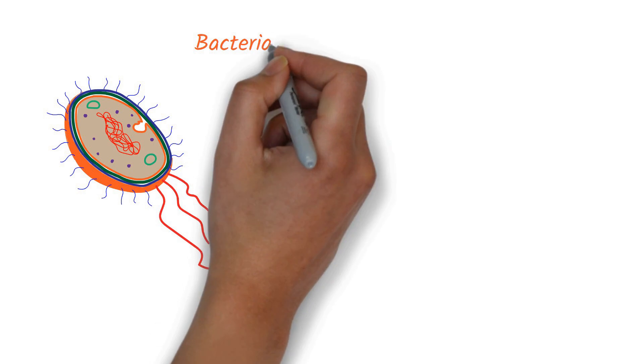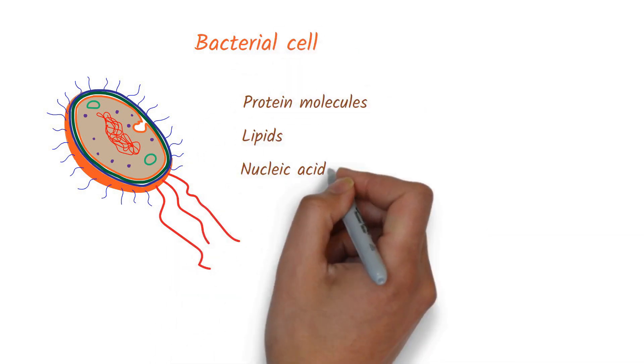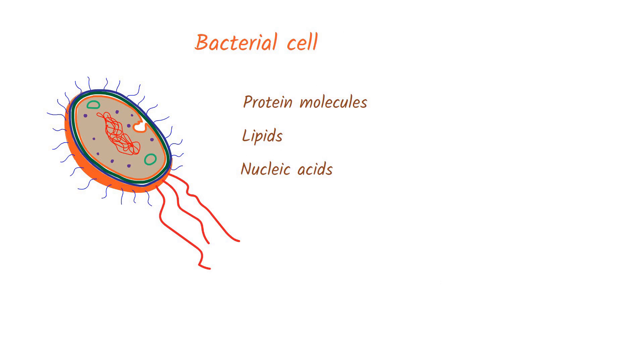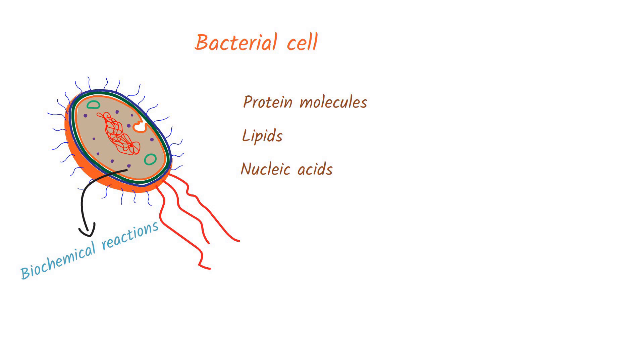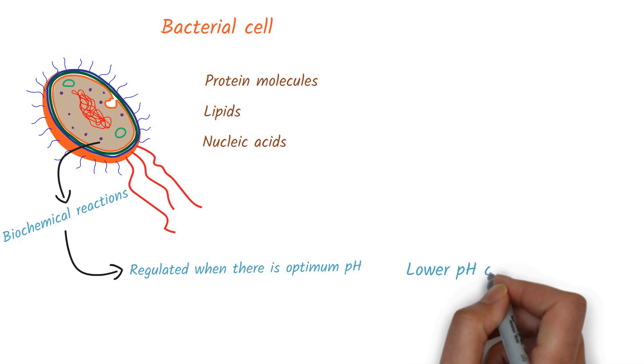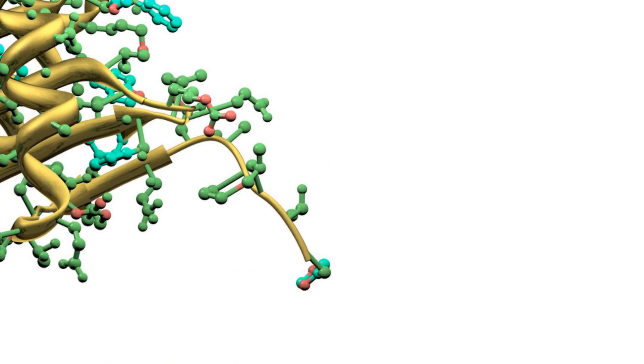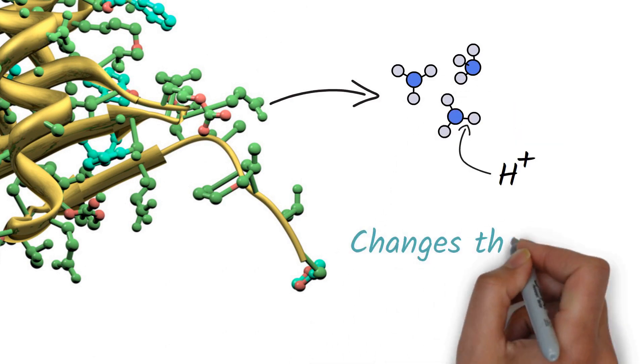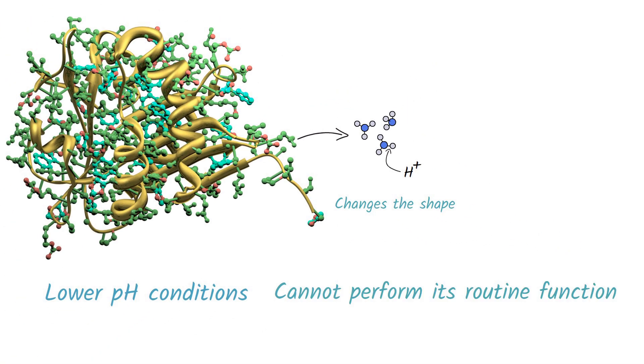As we know, the bacterial cell consists of several protein molecules, lipids, and nucleic acids, and the cell hosts several biochemical reactions. All these activities are regulated when there is optimum pH. In lower pH conditions, the increased hydrogen ions break the weak hydrogen bonds of protein side chains and finally change the shape of the protein. When a protein is not in its original shape, it cannot perform its routine function and ultimately the bacteria cannot survive.